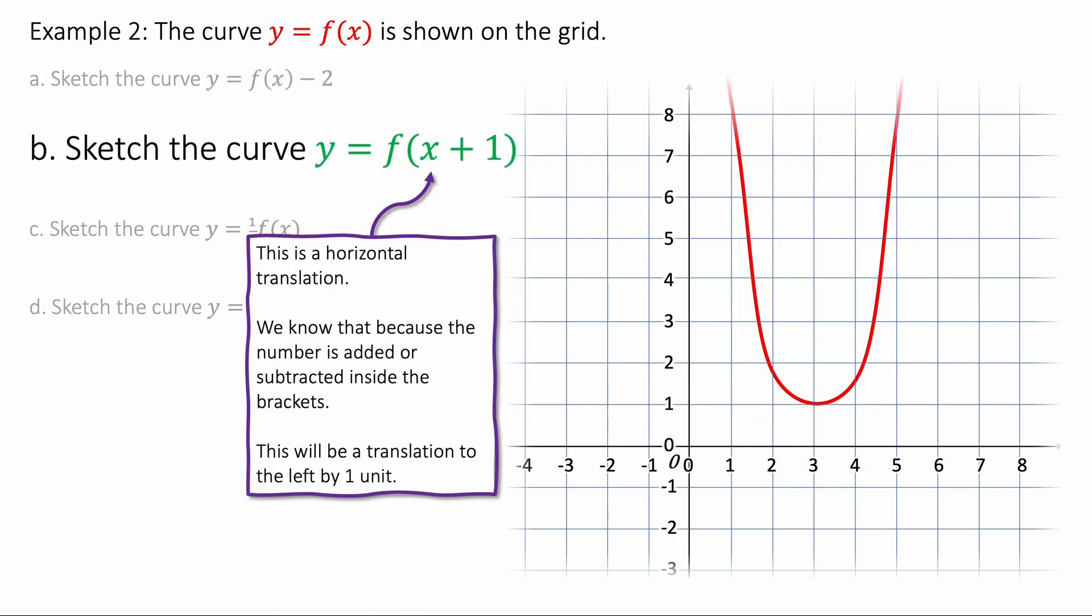Next one. Sketch the curve y equals f of x plus 1. And this is a horizontal translation. But it's plus 1 inside the brackets, so you move it more negative by one space. And it's translating by one unit to the left. Like that.